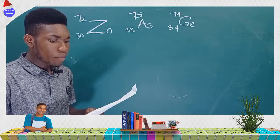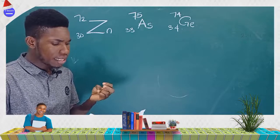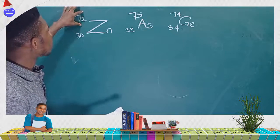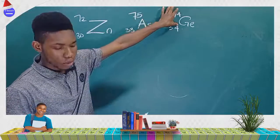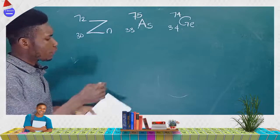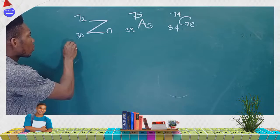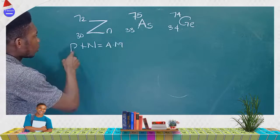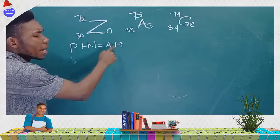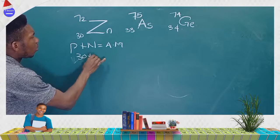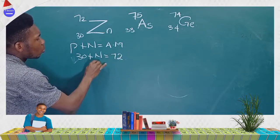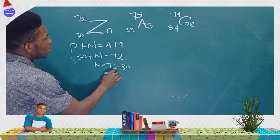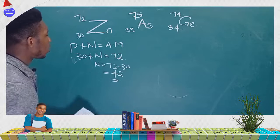Option D — same mass number — is wrong; they have different mass numbers: 72, 75, and 74. Now let's check option C, same number of neutrons. The number of neutrons equals atomic mass minus atomic number. For zinc: 72 minus 30 equals 42 neutrons.